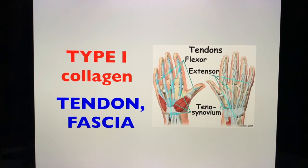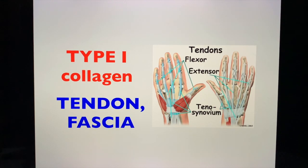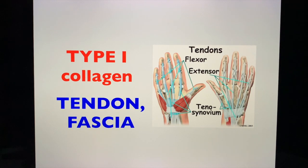Type 1 collagen is also found in the tendons and the fascia. So to summarize type 1: bones, tendons, and fascia.